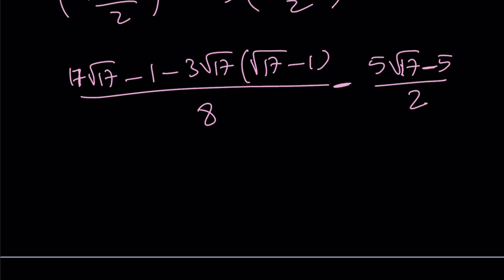So we can go ahead and multiply this one by 4 over 4 to make a common denominator. But let's go ahead and simplify this first. What does this give us? That's 17 root 17 minus 1 minus 3 times 17, which is 51, and then plus 3 root 17. And that is divided by 8. But since I already have a common denominator, I can go ahead.